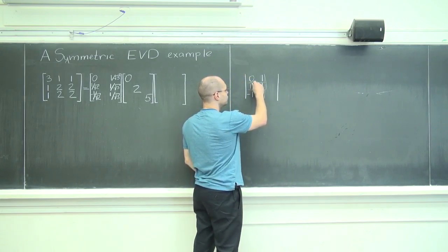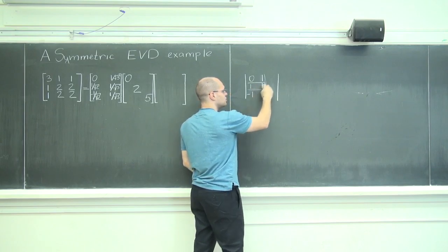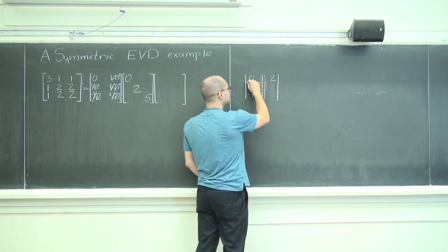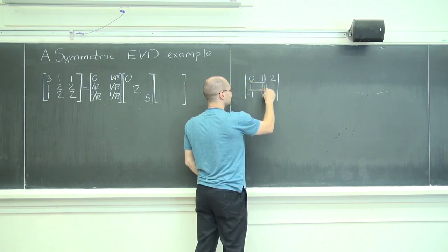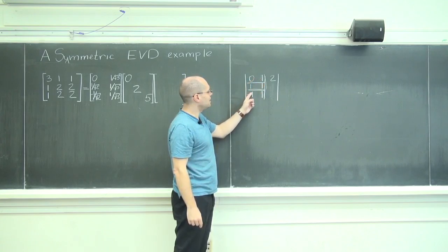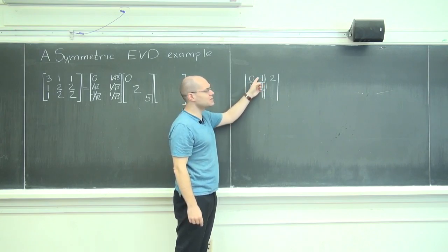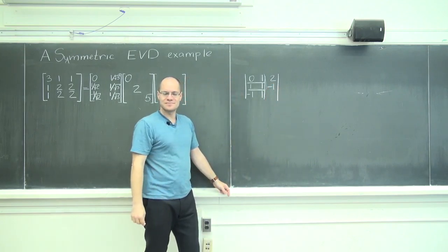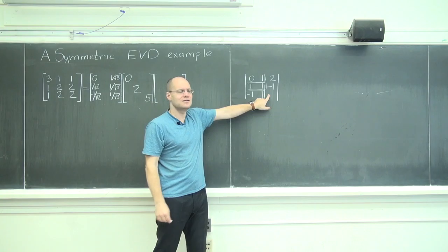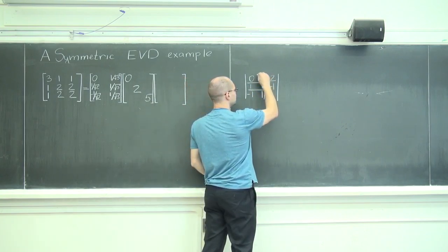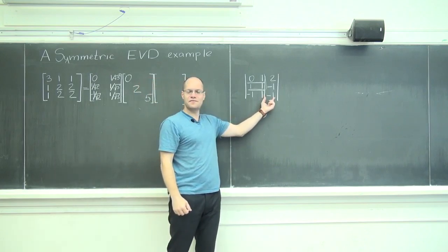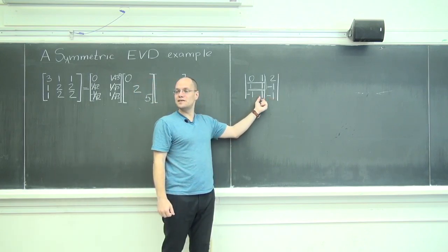So what will go in here is this determinant, which is 2. And what will go in here is minus this determinant. 0, 1, minus 1, 1. That determinant is 1. But what goes here is minus that determinant. And finally, what goes here is this determinant, which is minus 1. And here is a vector that's orthogonal to each one of these.